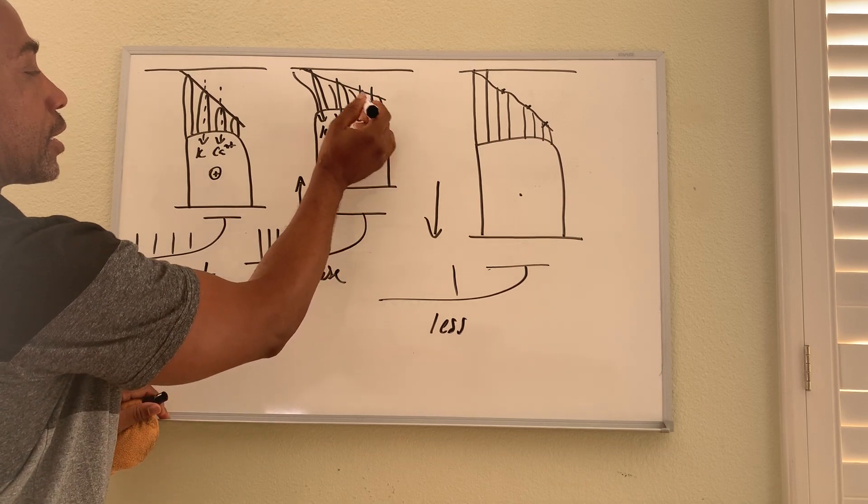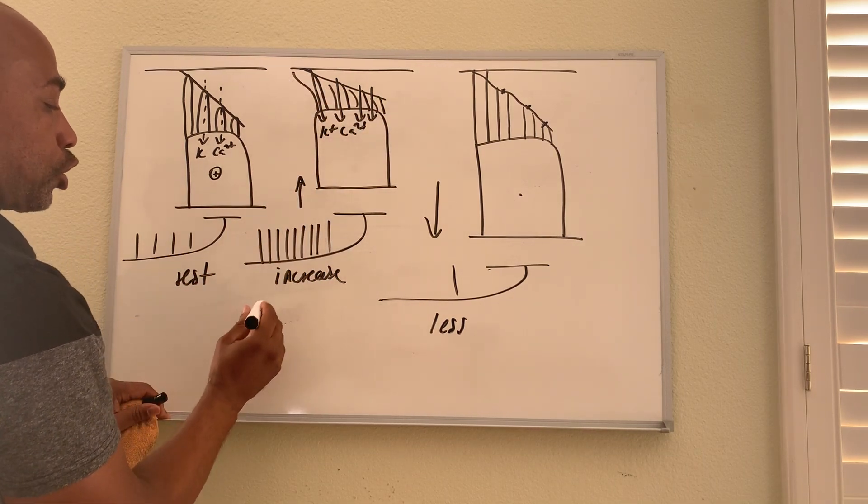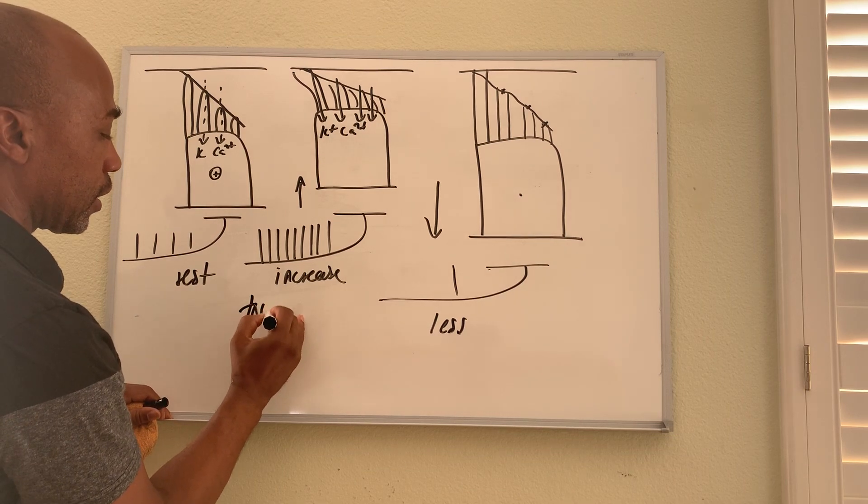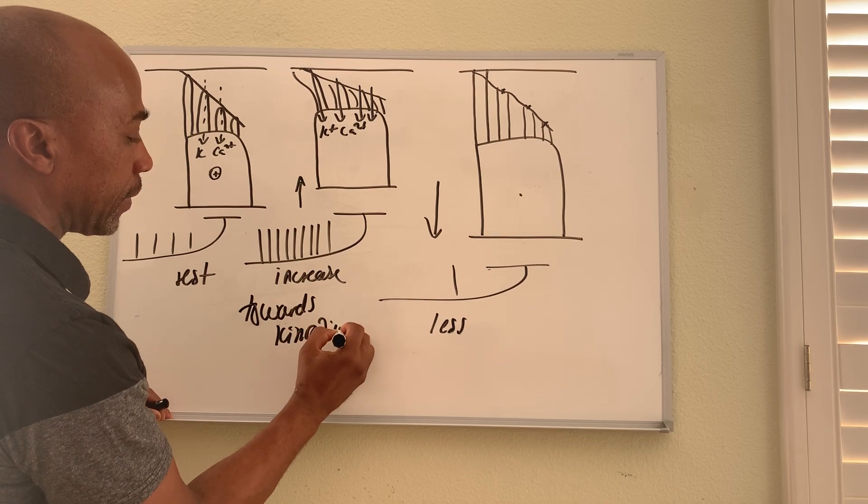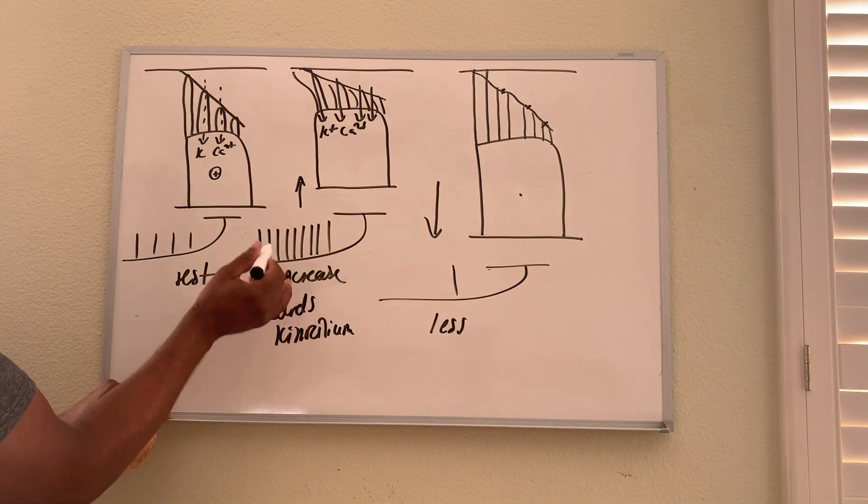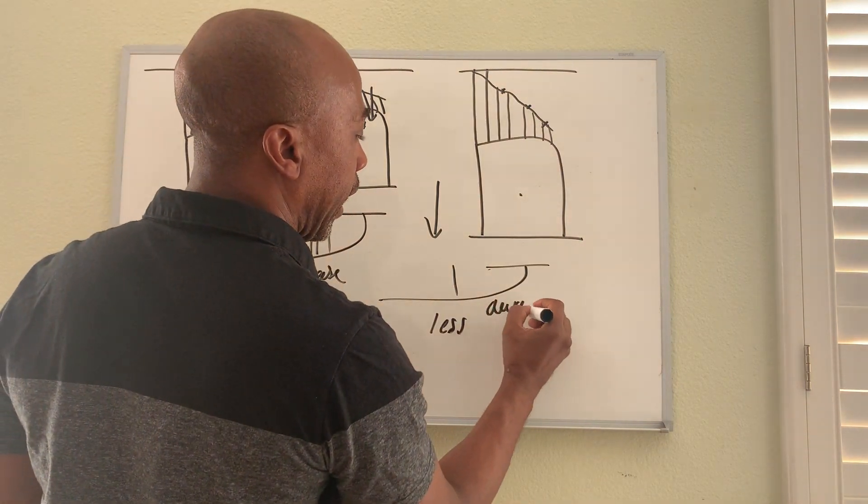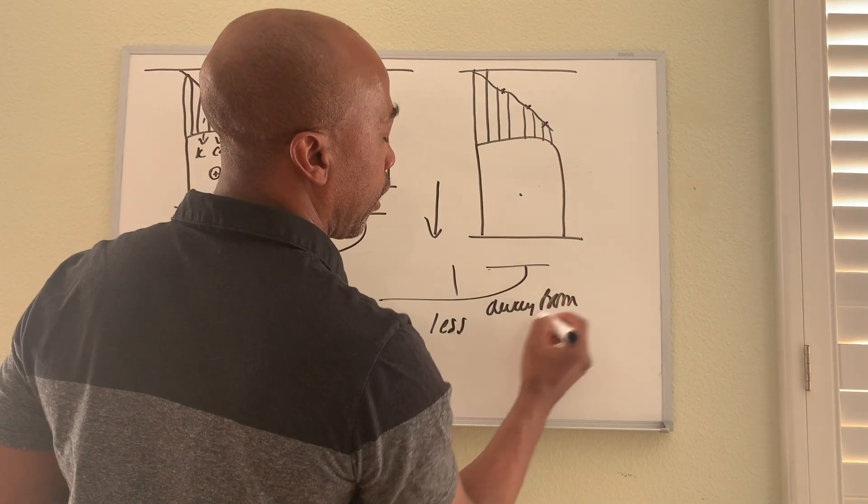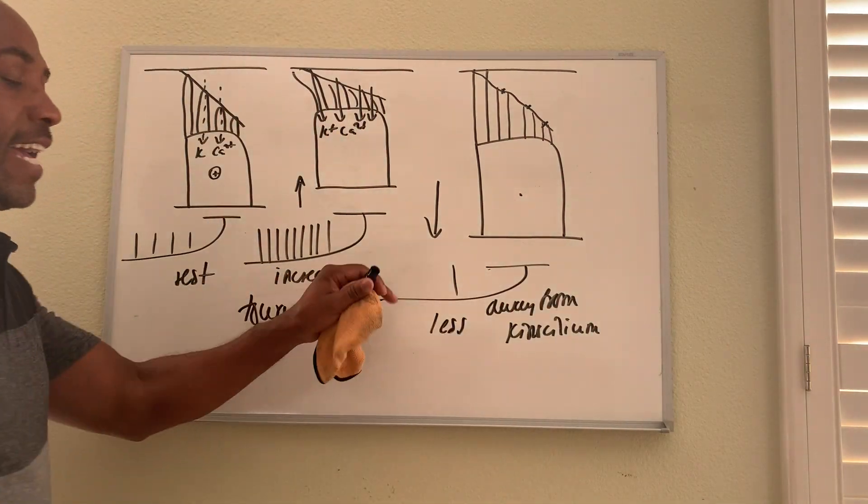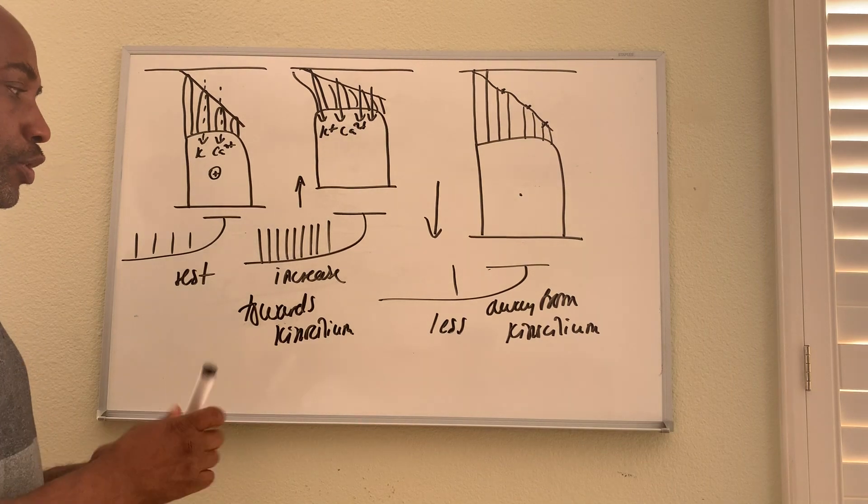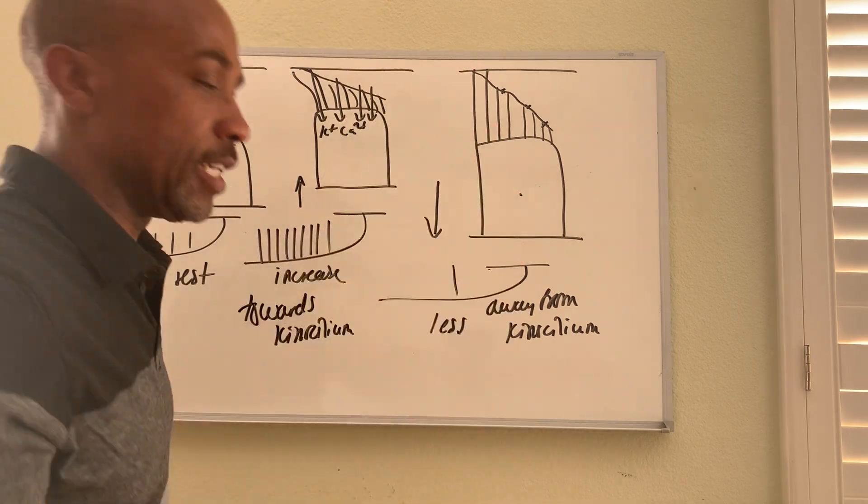Whenever the stereocilia bend towards the kinocilium, that's when it increases. So towards the kinocilium you always increase the action potential frequency. And when you go away from it, away from the kinocilium, that's when you have less action potentials.